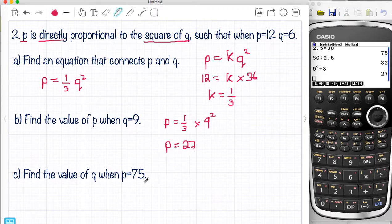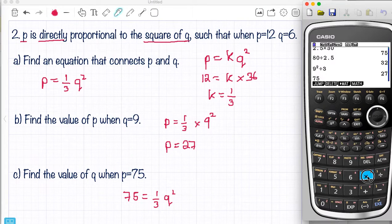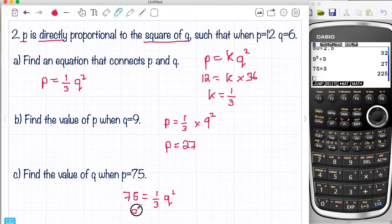And if we go the other way, find Q when P is 75. So this time my answer, or if you like, the P is 75 equals one-third Q squared. So I'm going to times both sides by 3. And I get 225. So Q squared is 225. Therefore Q is 15.